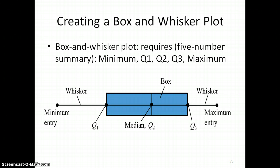Using that information, as well as the minimum and the maximum for the data, we call that the five number summary. You can create this box and whisker plot.